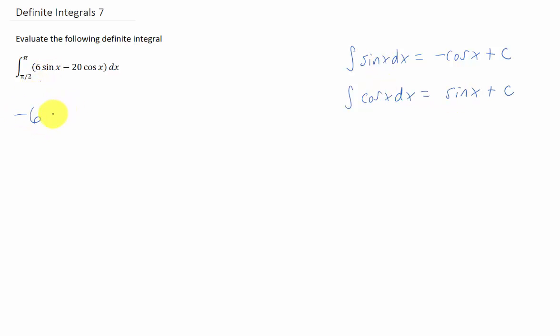Integrating this simply gives us negative six cosine of x minus 20 sine of x, and we're going to evaluate that whole thing from pi over two to pi.